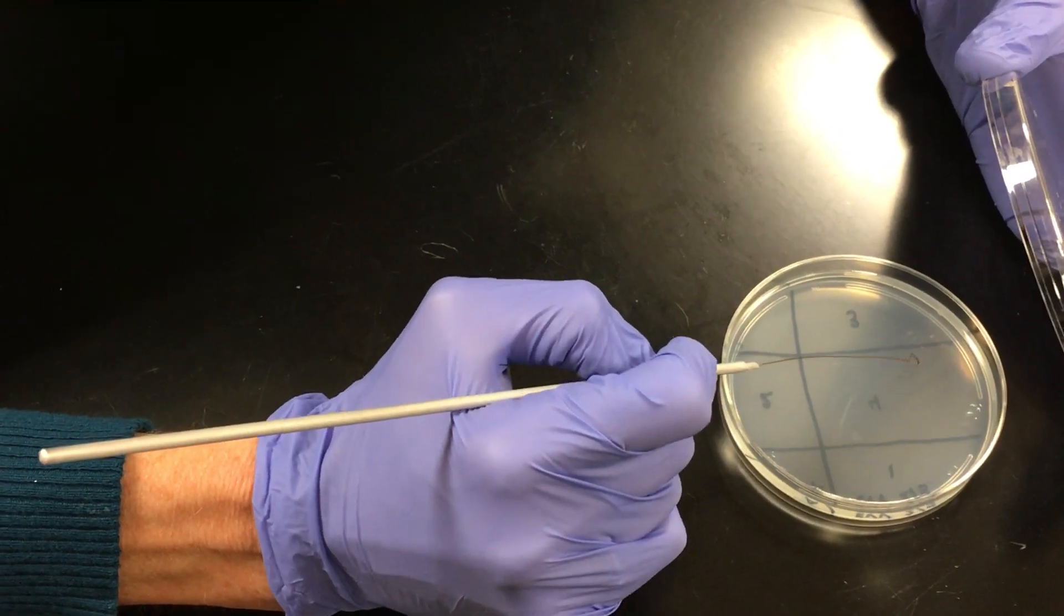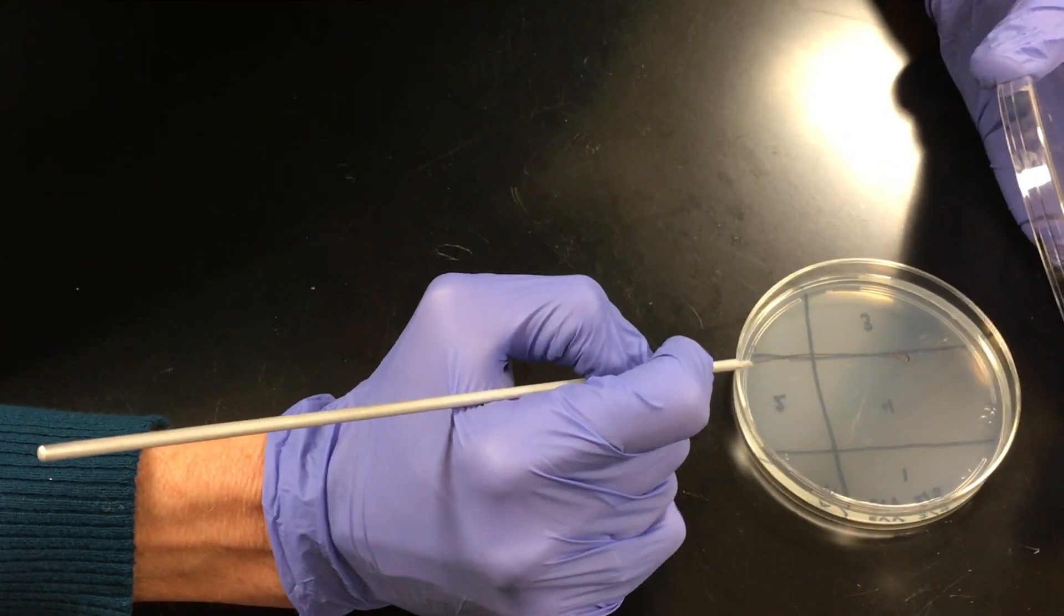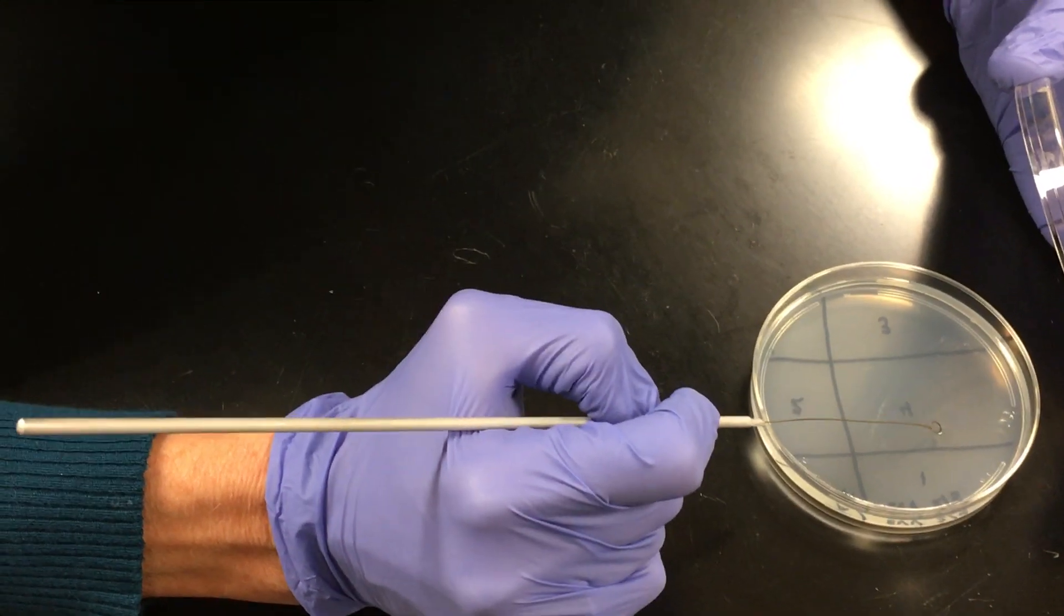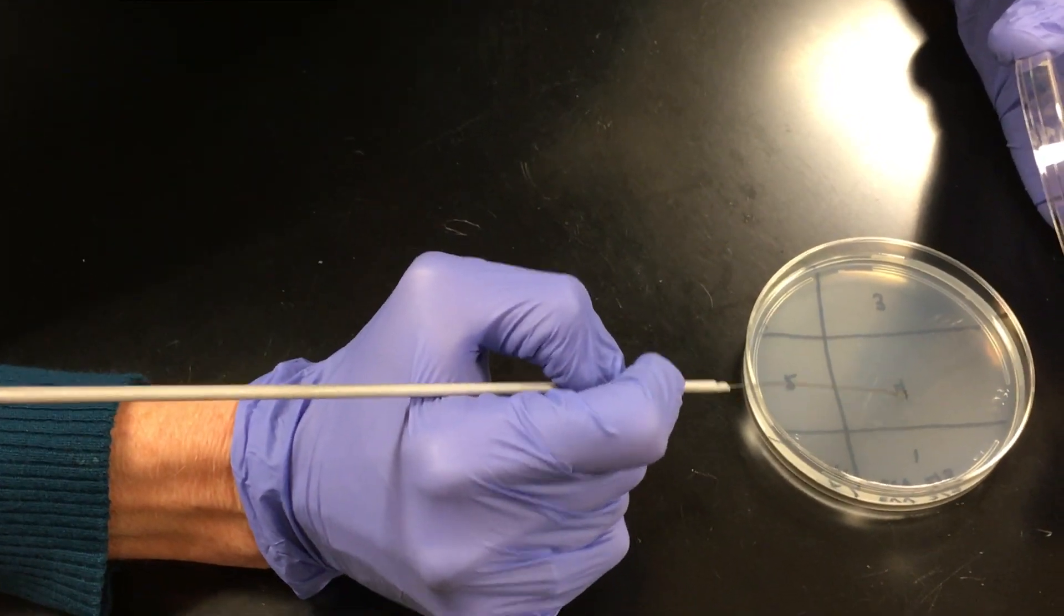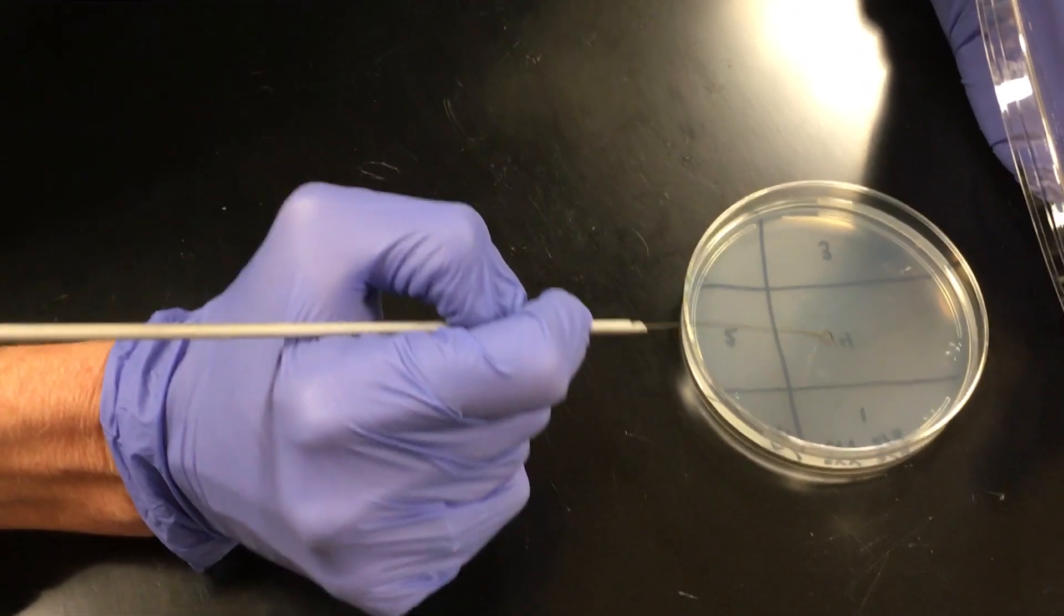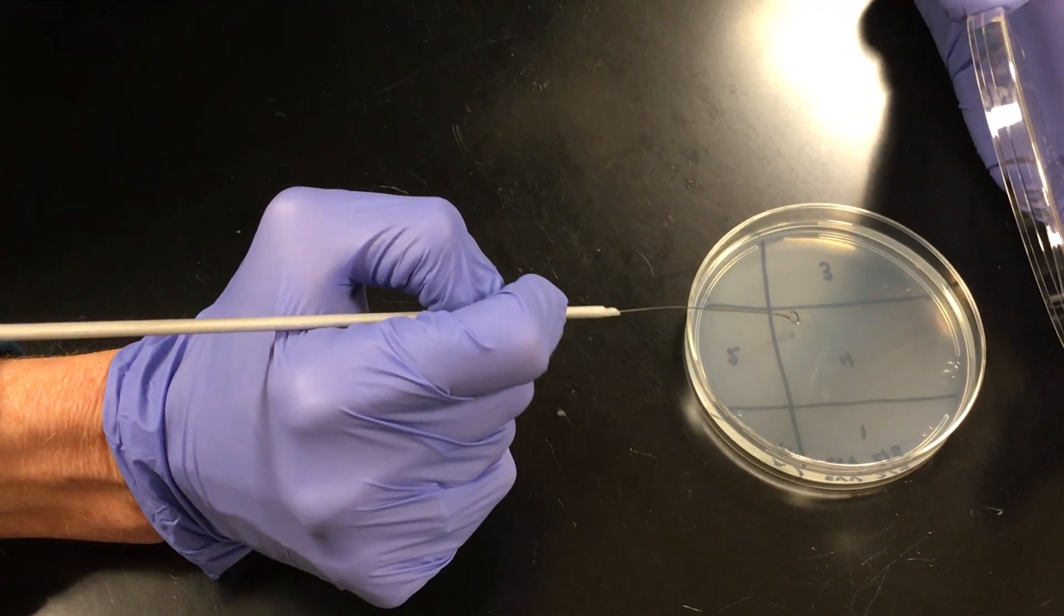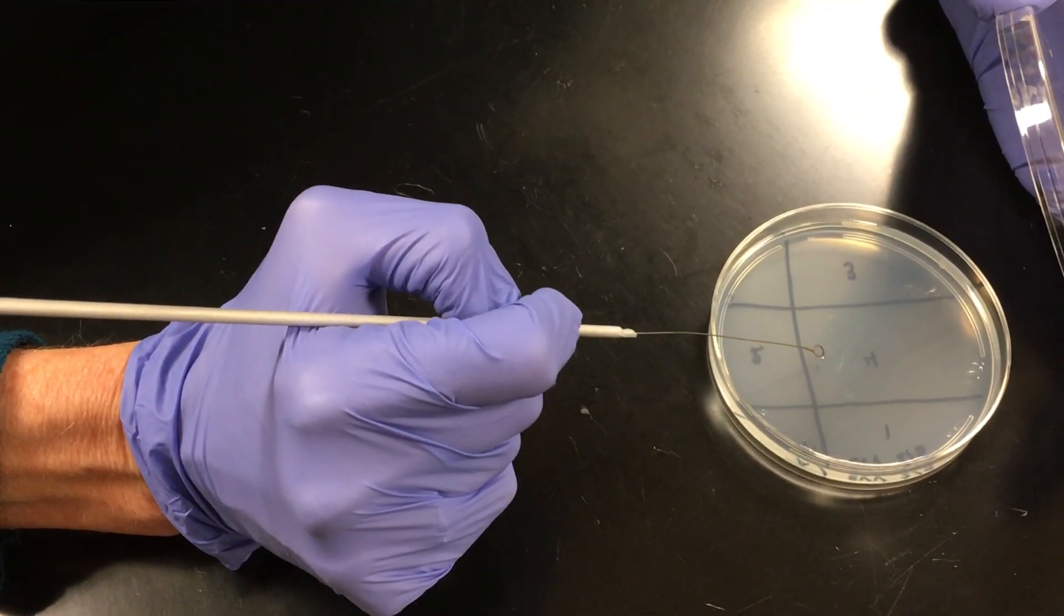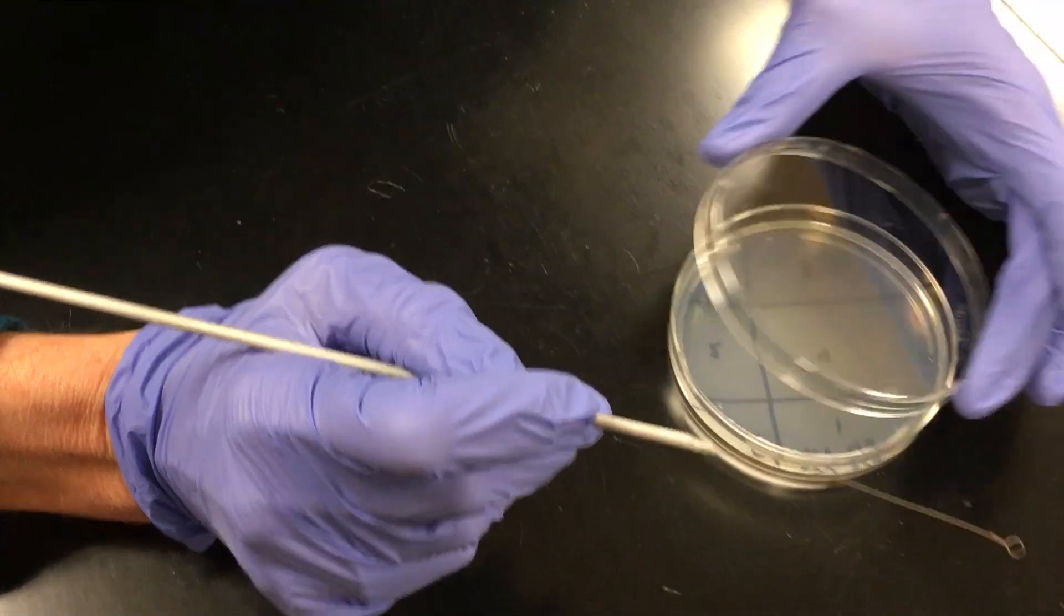Now I'm just going to streak across quadrant four and I'm trying to isolate bacterium so they form an individual colony. And notice I'm moving down that quadrant. I'm not crossing over my lines. Now I'm going to go as far as I can go without going into any of the other quadrants. Then I close my plate.